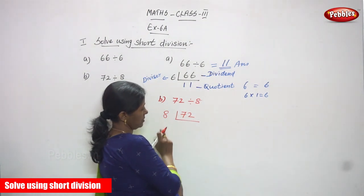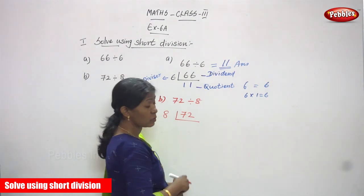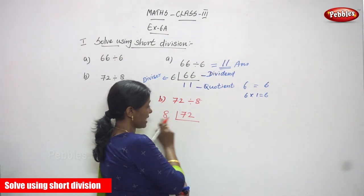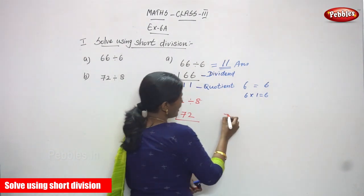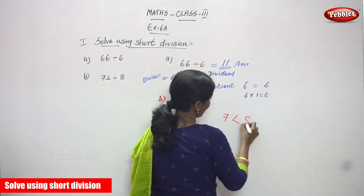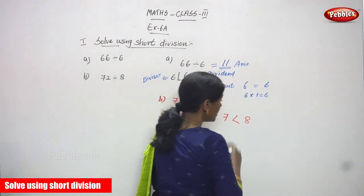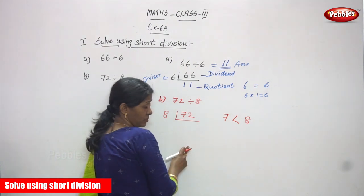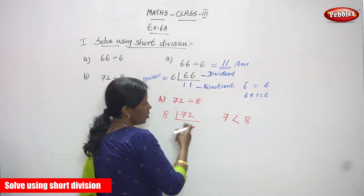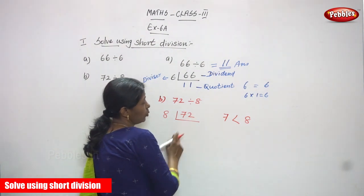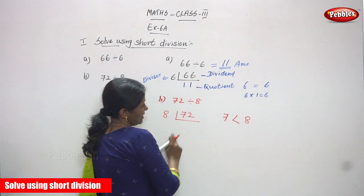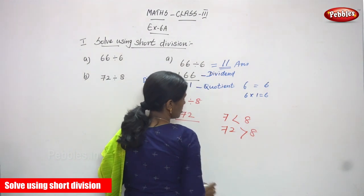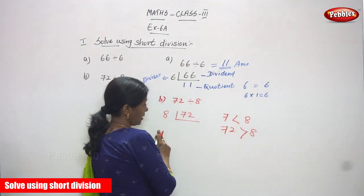These are the 1's and 10's: 2 ones and 7 tens — that is 72. First, compare the 10's: 7 tens compared with 8. That means 7 is less than 8, so it is not enough to divide. You have to move on to the next digit — the ones — which is 2. So 7 tens and 2 ones make 72, and 72 is greater than 8, so it is enough to divide.